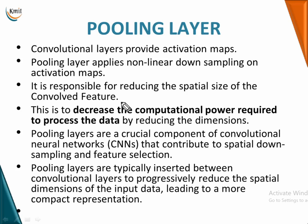A pooling layer is one of the crucial components of convolutional neural networks. It helps you downsample your spatial dimensions and perform feature selection with reduced data dimensions, decreasing computational power. You insert a pooling layer between convolutional layers to progressively reduce the spatial dimensions of the input data, leading to a more compact representation.